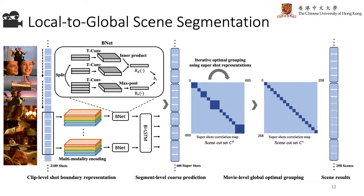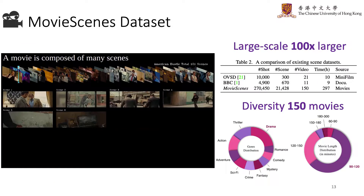We design a local-to-global approach to segment scenes. The clip-level Bnet is to represent the shot boundary considering multiple shots. The segment-level sequential model is to consider the relationship among several shot boundaries over a large range. And the movie-level optimal grouping is to consider the global contextual information over the whole movie to give top-down guidance.